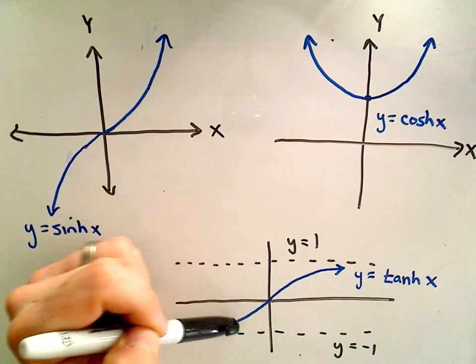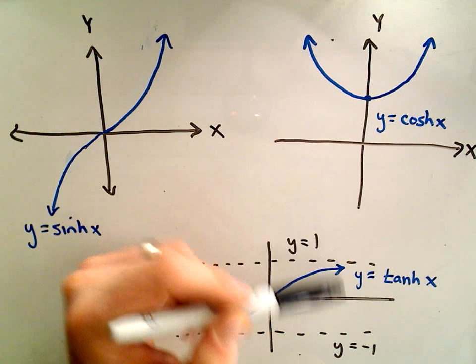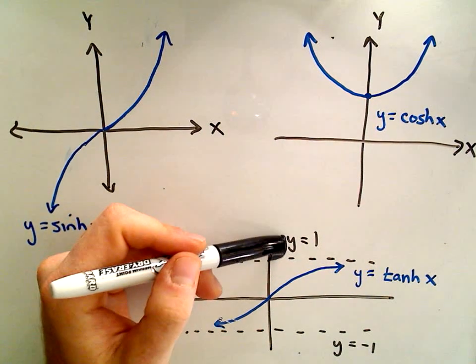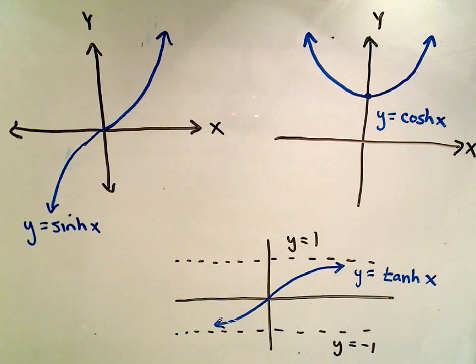Remember, inverse tangent has asymptotes at pi over 2 and negative pi over 2, whereas hyperbolic tangent will have asymptotes at y equals 1 and y equals negative 1, horizontal asymptotes.